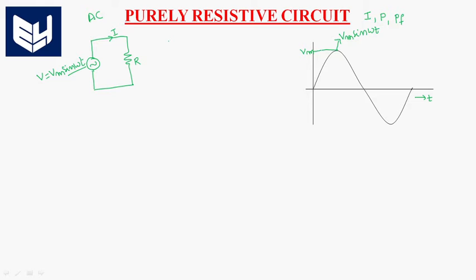From the basic class, I is directly proportional to V, and I = V/R from Ohm's law. Since I is directly proportional to V, the current is also a sine wave. So we can expect the waveform exactly as a sine wave. This is the current flowing through the load, that is Im sin ωt.